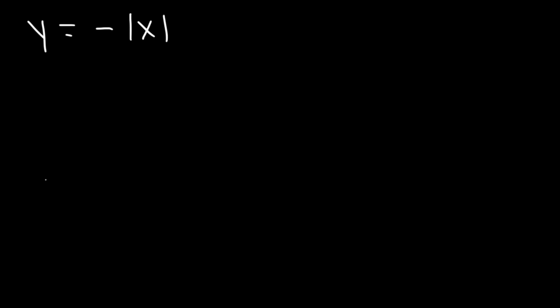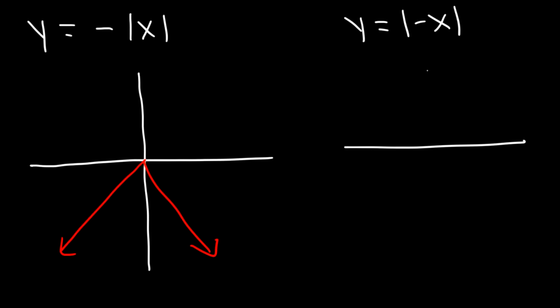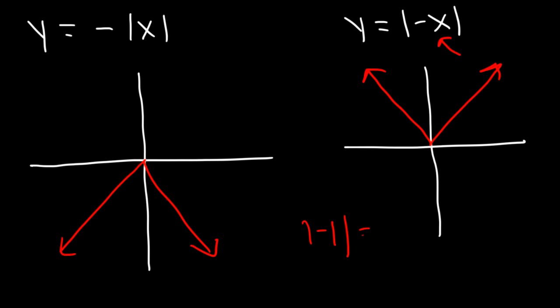What about the absolute value of negative x? If the negative is on the outside, the graph will reflect over the x-axis, so instead of opening upward it opens downward. But if the negative is on the inside, it doesn't matter — it's still going to open upward, because the absolute value of any negative number produces a positive result. For example, plugging in positive 1 gives |−1| = 1. So the negative on the inside will not cause the graph to open downward, but the negative on the outside will.